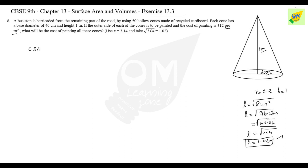So this is the curved surface area of the cone. The curved surface area of a cone is π × r × l. Here r is equal to 0.2 meters, and the slant height l is equal to 1.02.